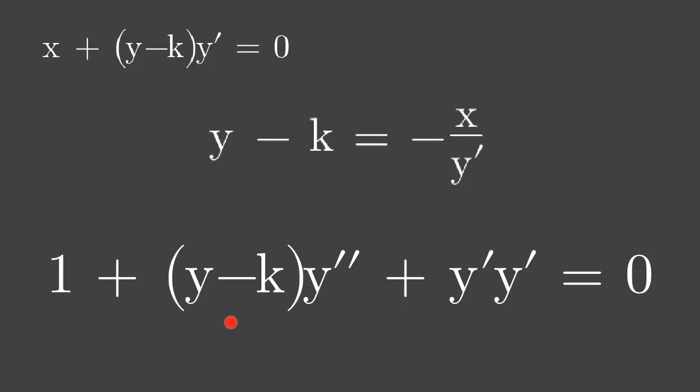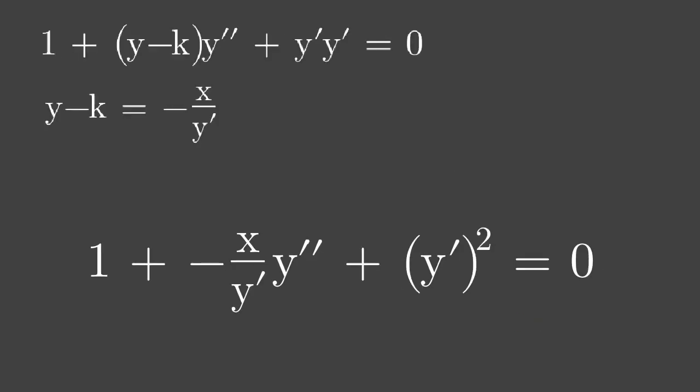Replace y minus k in the new equation by negative x over y prime. Meanwhile, this product can be simplified. This is the new equation upon simplifying this product and replacing y minus k by negative x over y prime.